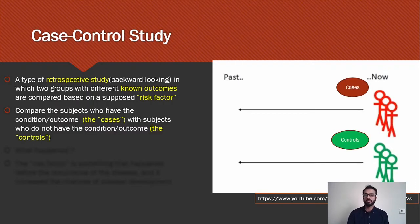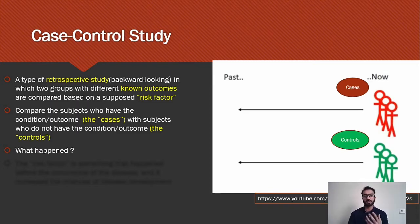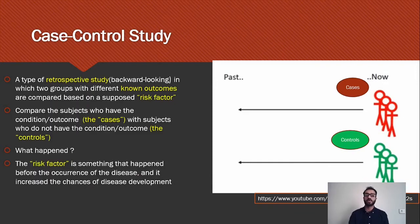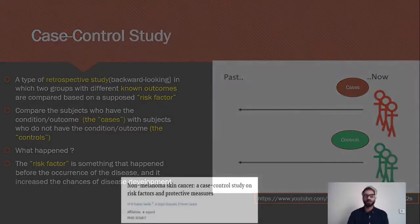The subjects who have the condition or the disease will be termed as the cases, and they will be compared with those subjects who don't have the condition or the disease. In this study, we will be answering questions like what happened that led to the development of the disease. The risk factor is basically something that happened before the occurrence of the disease and has increased the chances of disease development.